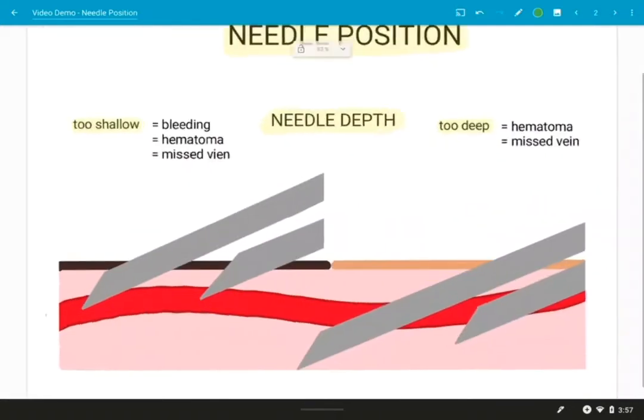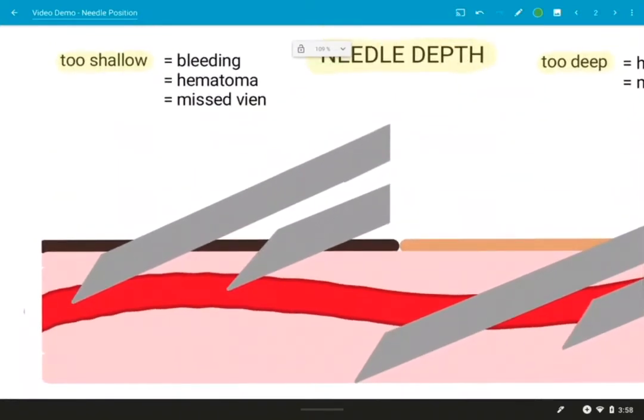Okay, let's talk about what happens if your needle is too shallow. It can cause bleeding, hematoma, or a missed vein. Let's go over the hematoma first.